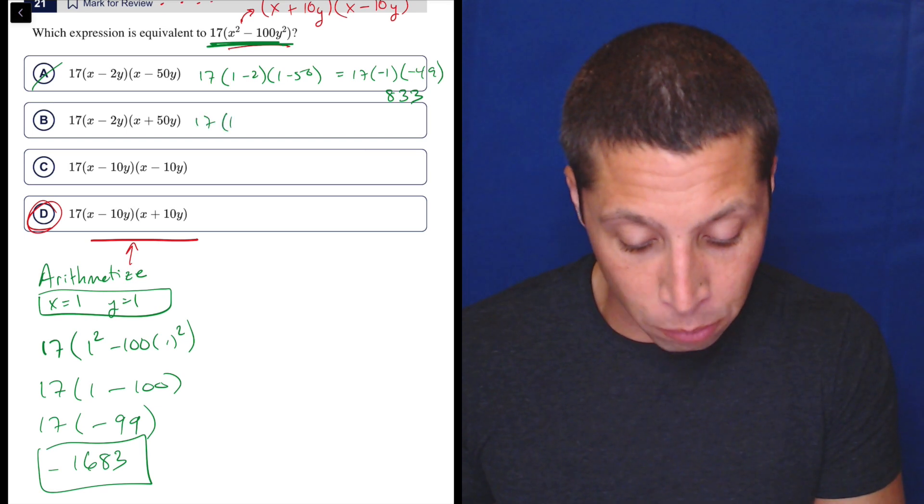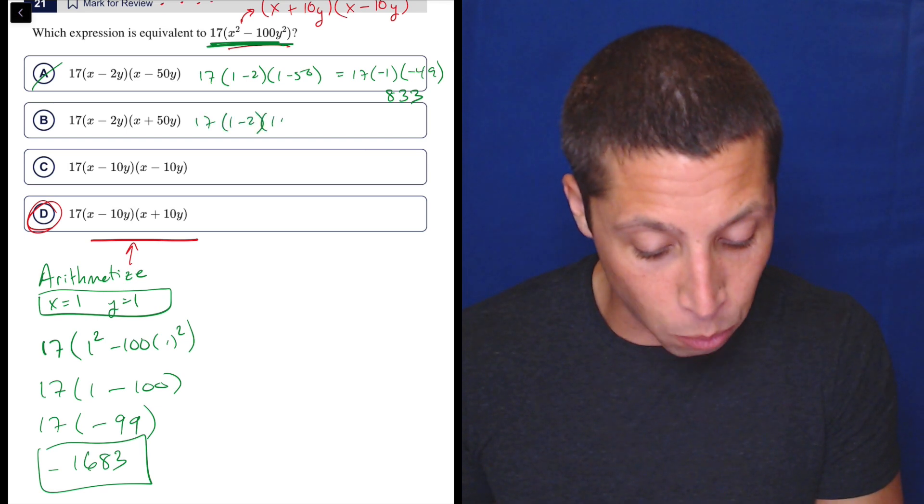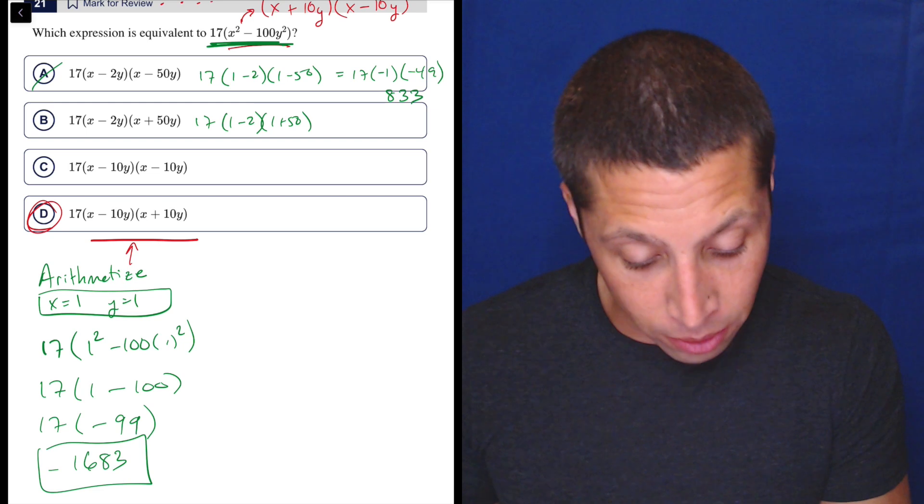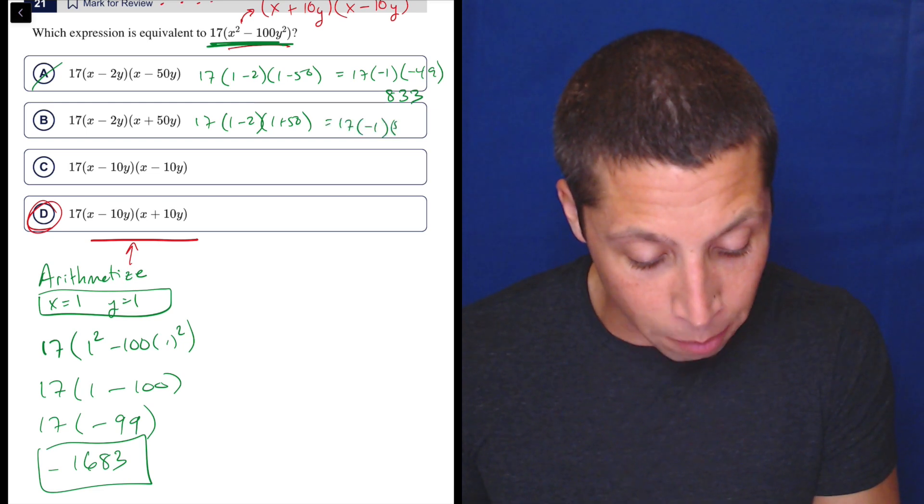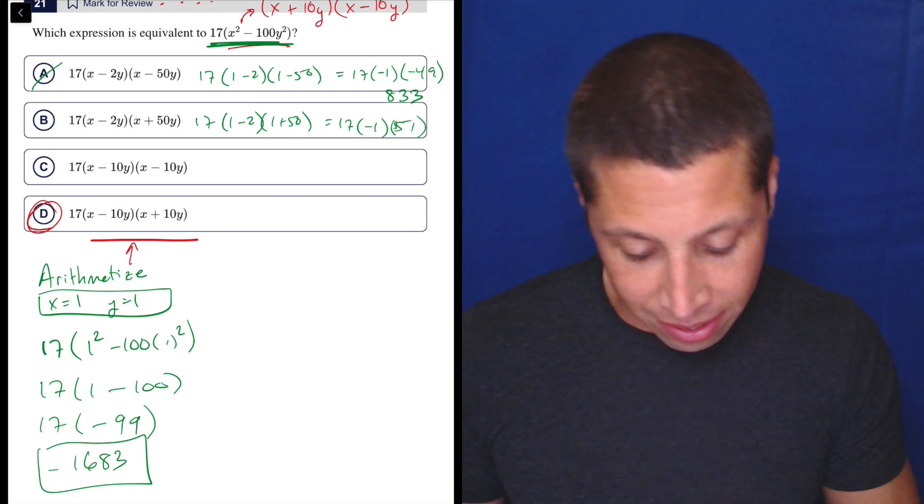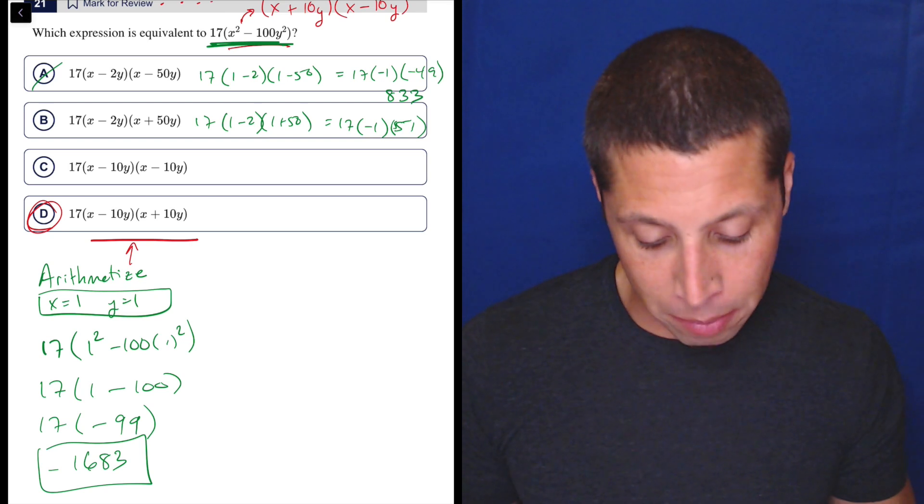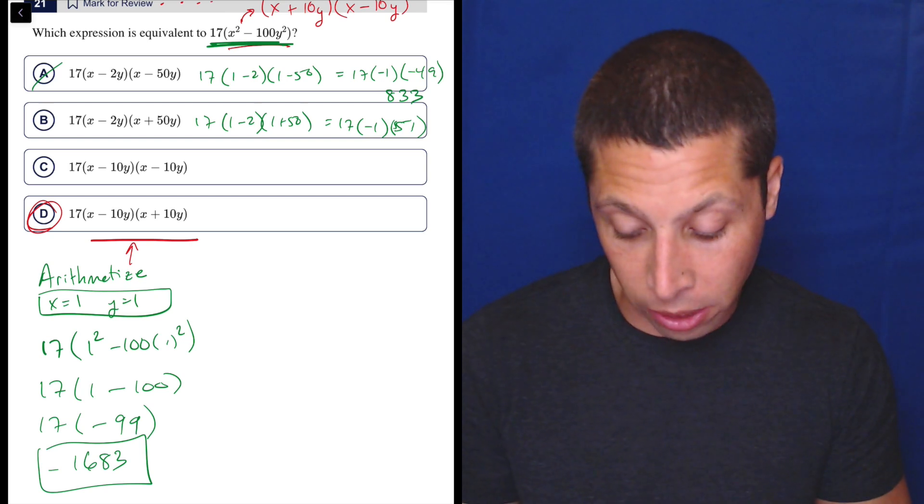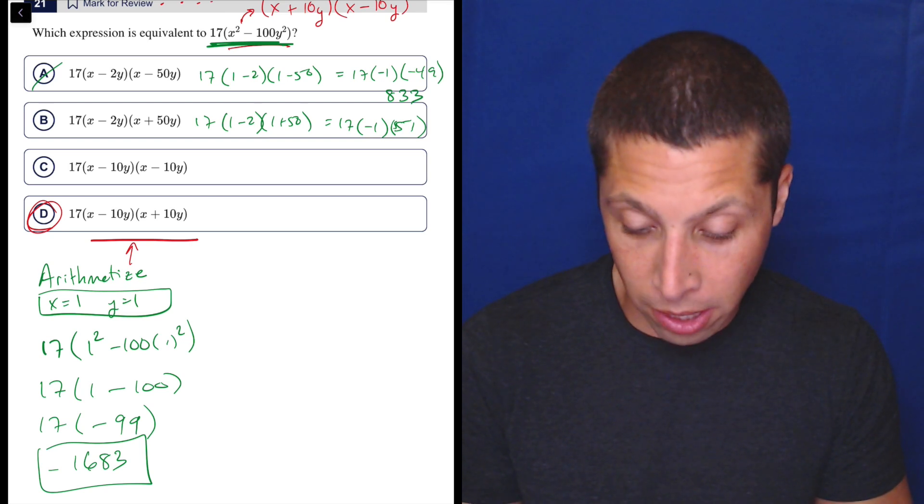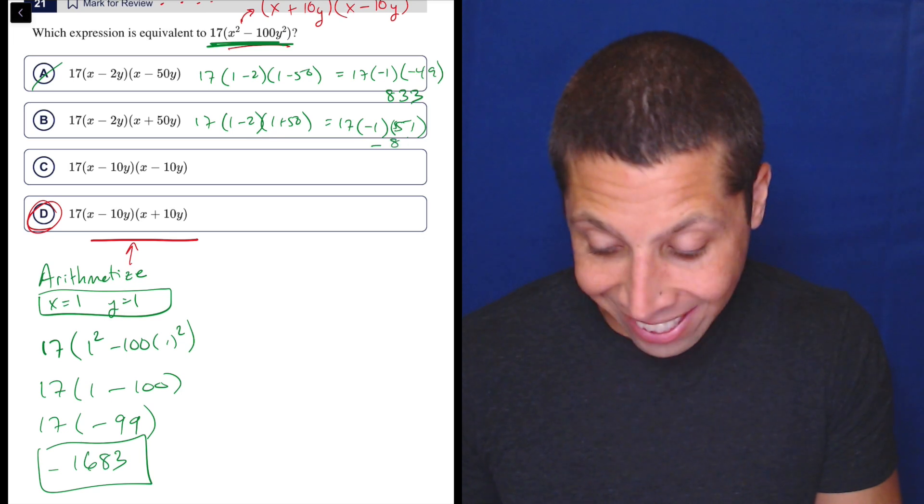So 17 times 1 minus 2 times 1 plus 50, so that's going to be 17 times negative 1 times 51. And the same thing, I kind of really want that 17 to be times 99. So I don't think this is going to work again. 17 times 51 is negative 867. Different number.